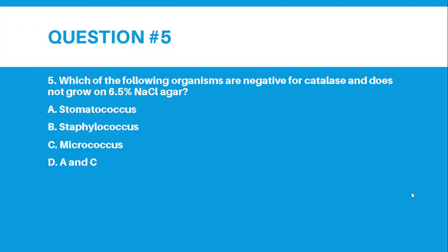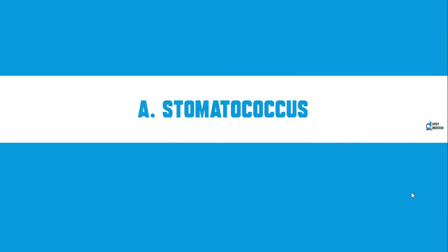Number 5. Which of the following organisms are negative for catalase and does not grow on 6.5% NaCl agar? Letter A, Stomatococcus. Letter B, Staphylococcus. Letter C, Micrococcus. Letter D, A and C. And the correct answer for number 5 is letter A, Stomatococcus.